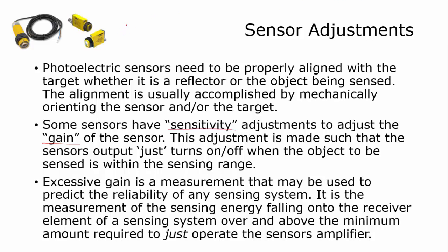You'll mount your sensor, you'll have your object that you want to sense, and you'll have it at the distance that it's going to sense. Then you'll adjust the sensitivity, and it's usually a small screwdriver type potentiometer, so that at this distance the sensor just either turns on or turns off, depending on the mode that you have it operating in.